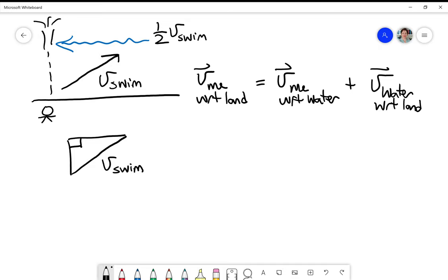Okay, so let's see. That means that my swim speed squared is equal to the water speed, which is half of my swim speed, squared plus my speed me with respect to the land.